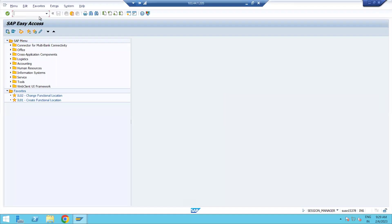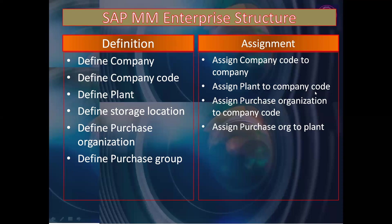The pending assignment was: assign company code to company, assign plant to company code, assign purchase organization to company code, and assign purchase org to plant. Assign company code to company is not part of MM — it has to be done by the FI team, the finance team. But for practice we require some financial data, that's the reason we are defining company, company code, and the assignment. The rest of the activities are related to MM.